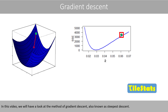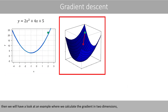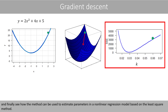In this video, we'll have a look at the method of gradient descent, also known as the steepest descent. We'll start by calculating the gradient on a simple example. Then we will have a look at an example where we calculate the gradient in two dimensions. And finally see how the method can be used to estimate parameters in a non-linear regression model based on the least-square method.